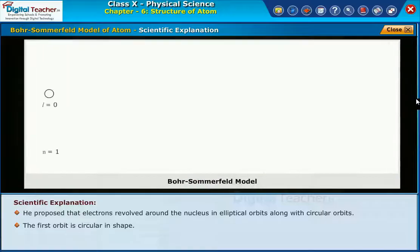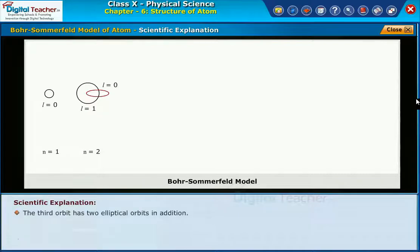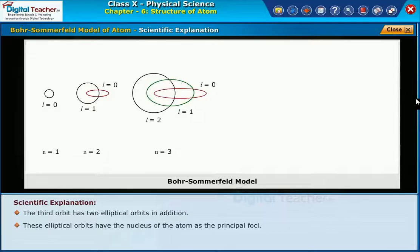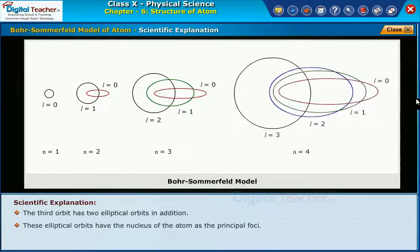The first orbit is circular in shape. The second orbit has one elliptical orbit in addition. The third orbit has two elliptical orbits in addition. These elliptical orbits have the nucleus of the atom as the principal focus.